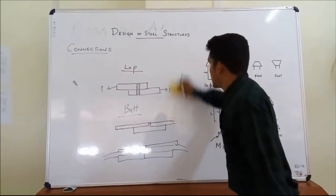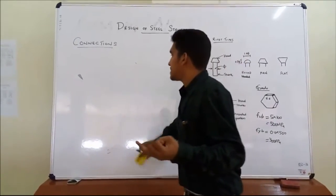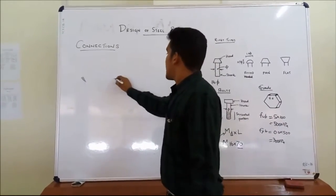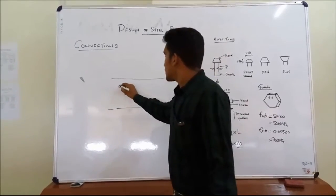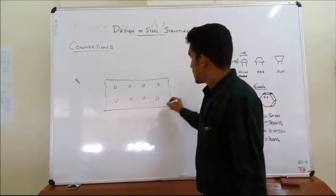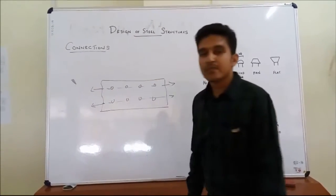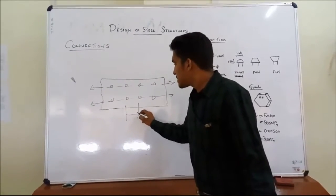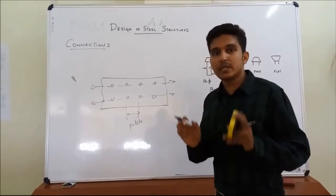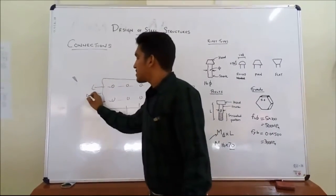Now we shall see the specifications of bolt or rivet connections. This is the bolt line. If the bolts are provided like this, this length is known as pitch. That is, it is defined as the horizontal distance between center to center distance between two holes or rivets, taken parallel to the direction of loading. It is known as pitch.